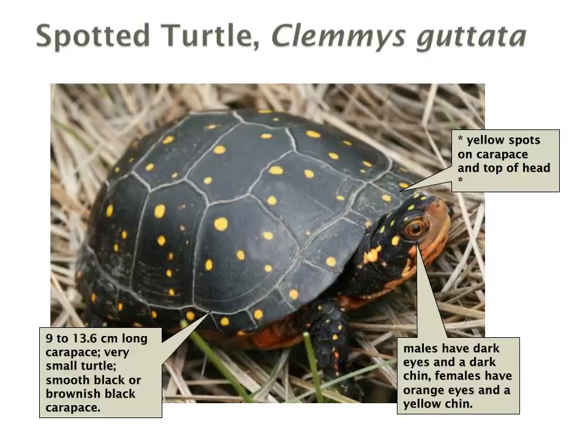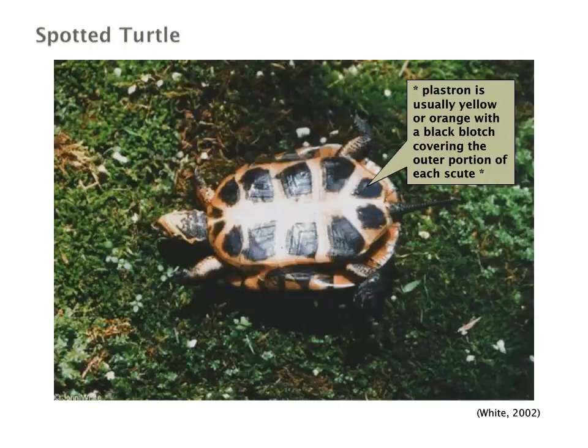The spotted turtle gets its name from its spots located on the carapace, as well as on its body and neck. It's relatively small — only 9 to 13 centimetres long — with a black or brown carapace with bright yellow spots on the top of its head. Males have dark eyes and a dark chin, while females have orange eyes and a yellow chin. The spotted turtle has a unique plastron of yellow or orange with a black blotch covering the outer portion of each scute.